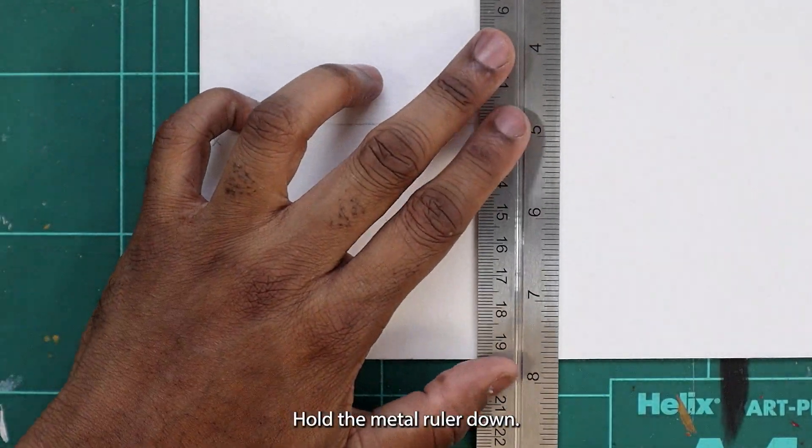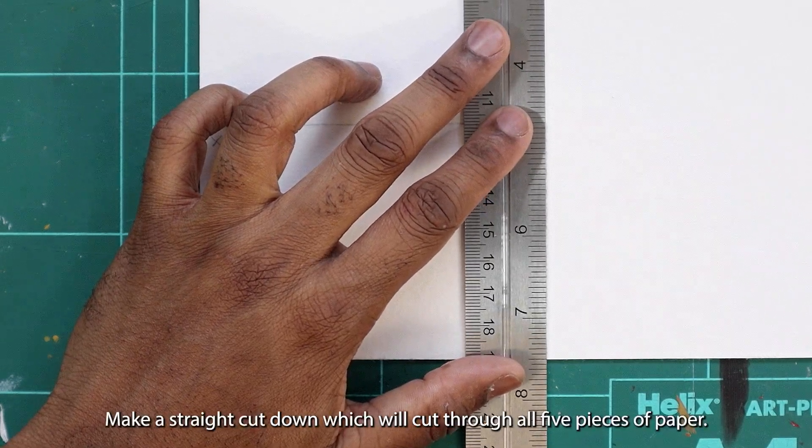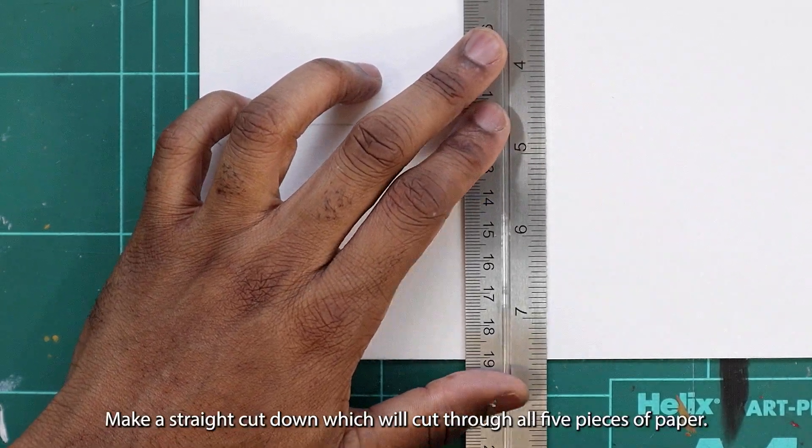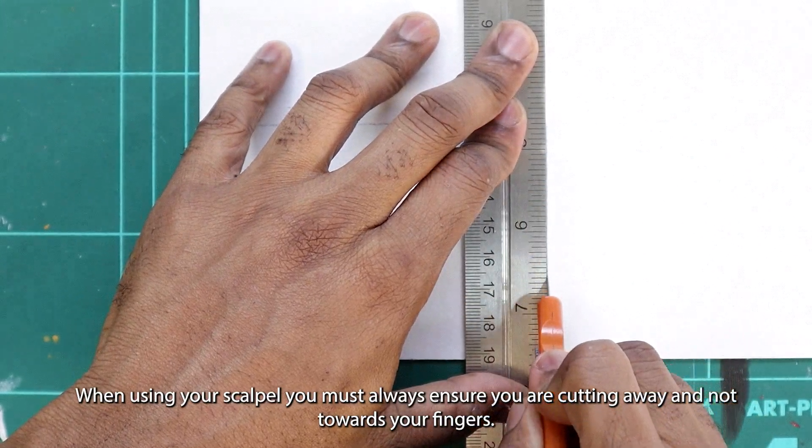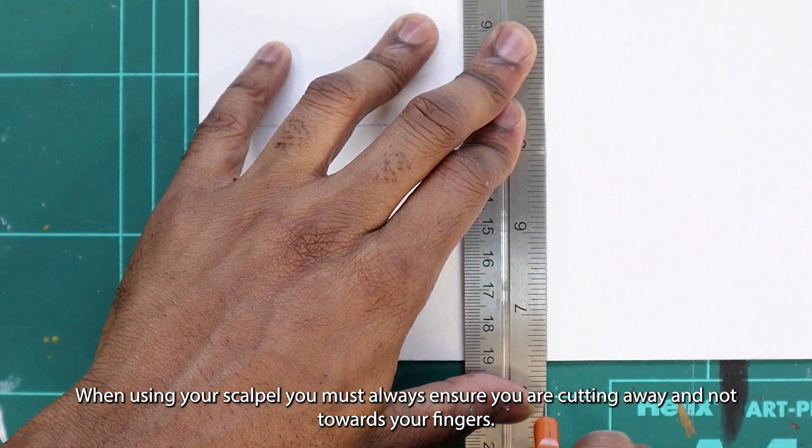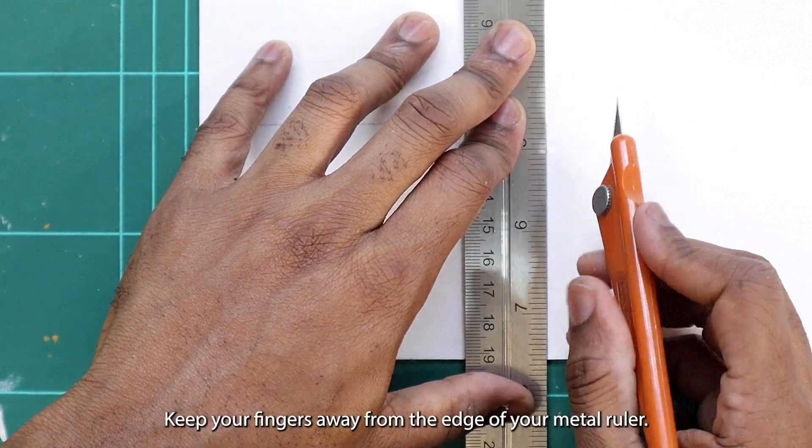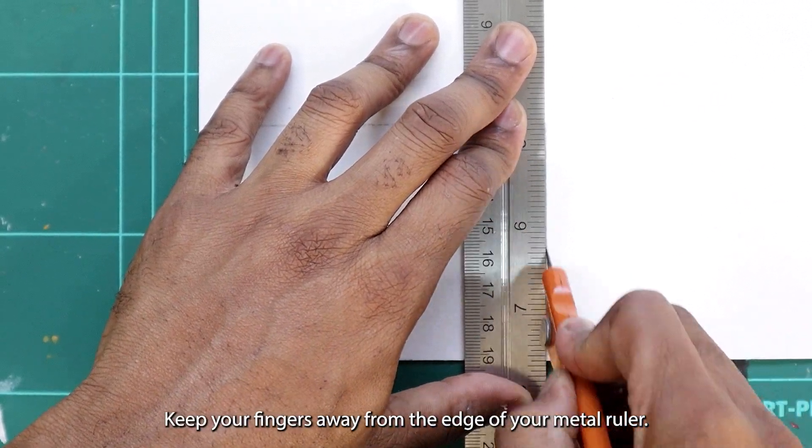Hold the metal ruler down. Make a straight cut down, which will cut through all three pieces of paper. When using your scalpel, you must always ensure you are cutting away and not toward your fingers. Keep your fingers away from the edge of your metal ruler.